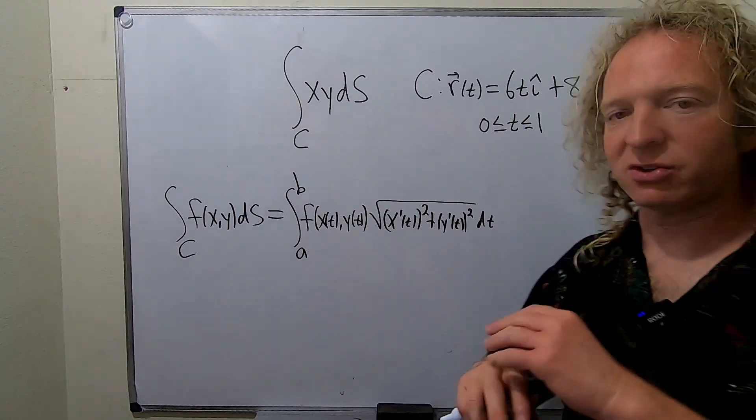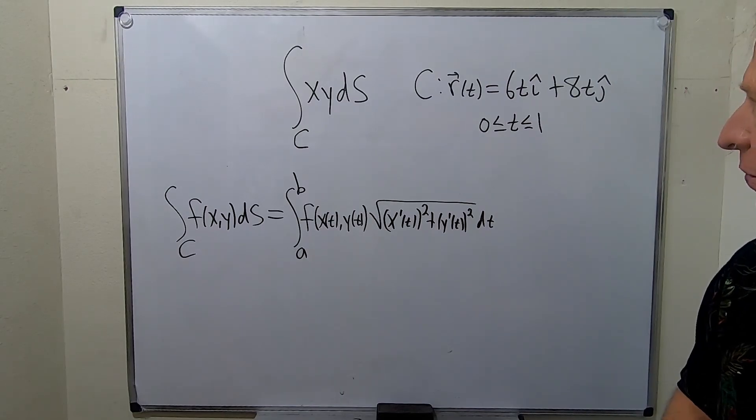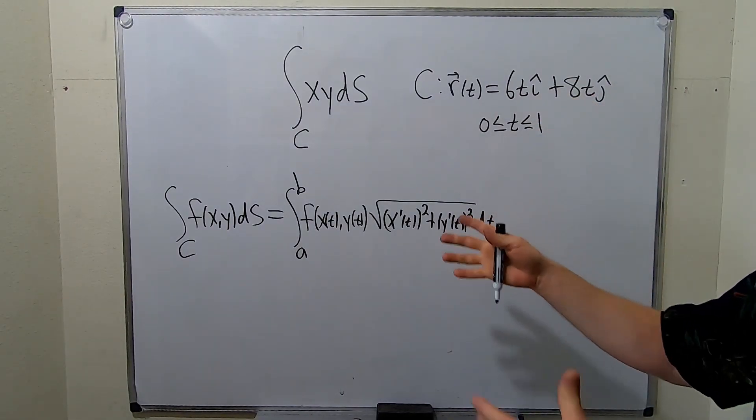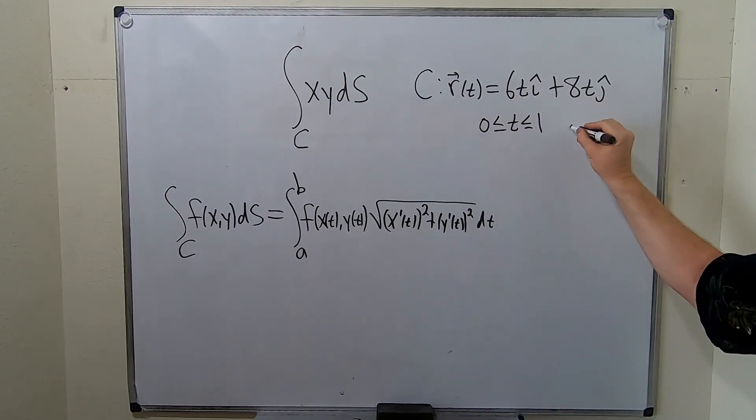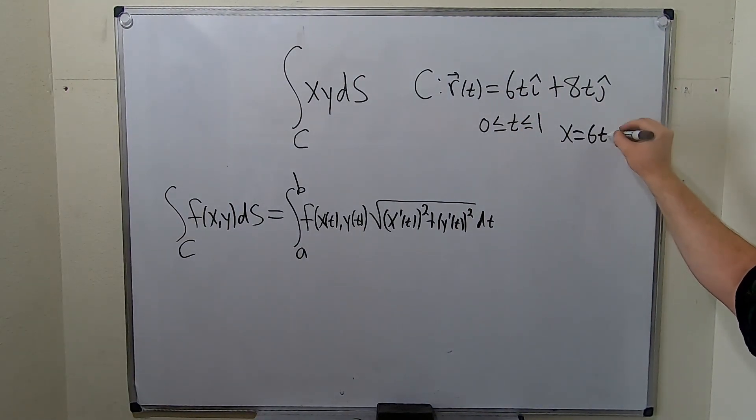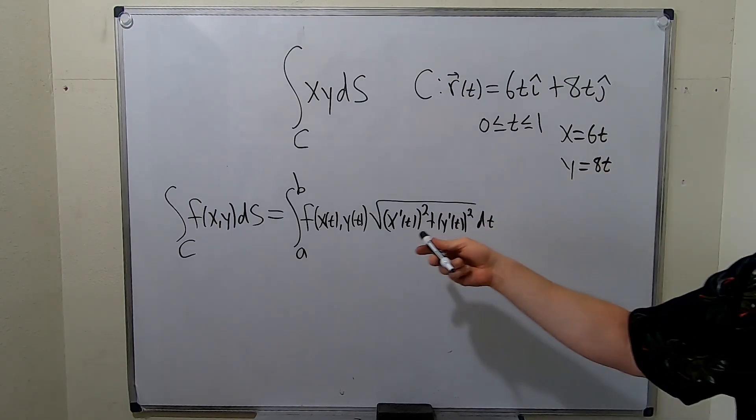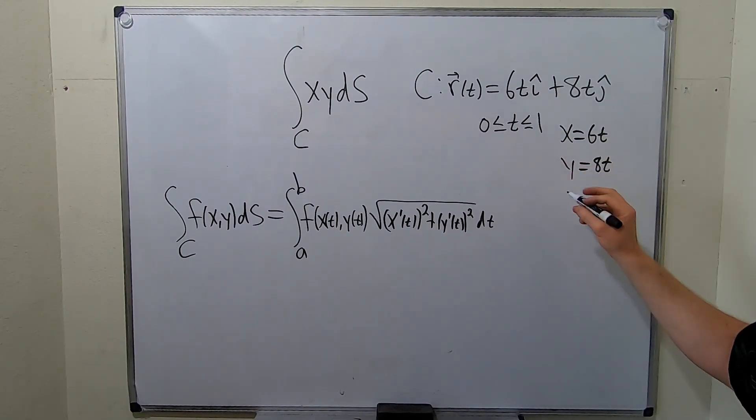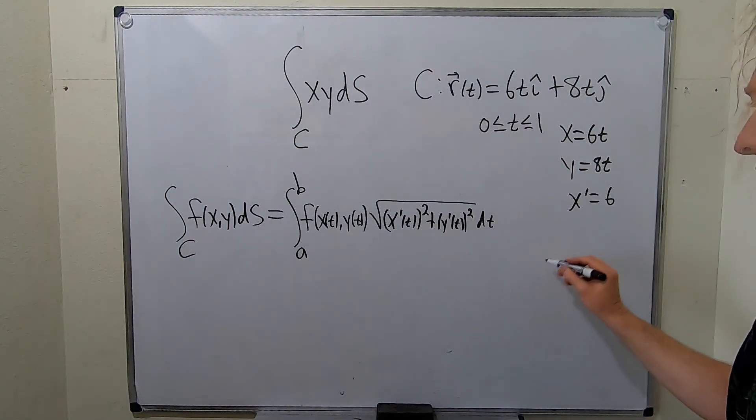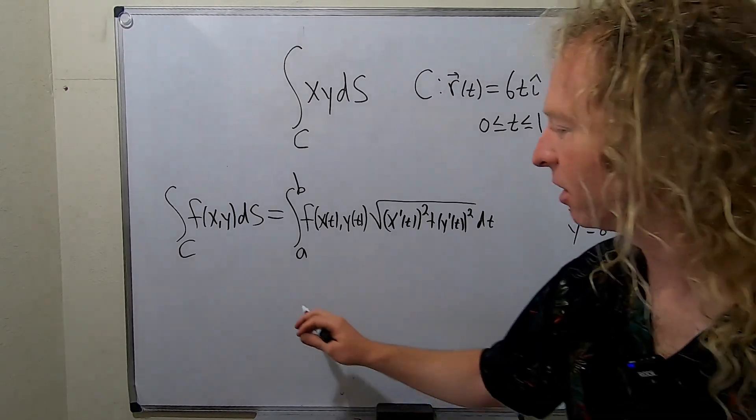If you forget it, you can just go on Google, Google line integral formula. Hopefully it comes up. This is a really important formula. So here we already have everything. So all we have to do is plug everything into the formula. So x is equal to 6t, and y is equal to 8t. So we'll have those, and we'll deal with that in a minute. And then we need the derivatives as well. So x prime is simply 6, and y prime is just 8. All right, good stuff. So let's keep going.